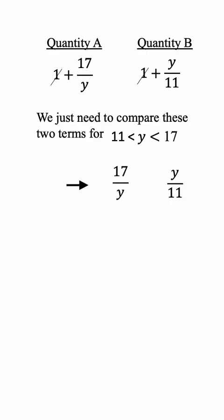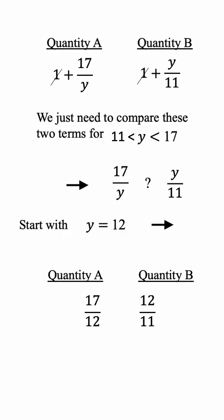We have these two terms to compare, so we can start with y equal to 12. By plugging it in to these two terms, we have quantity A equal 17 over 12 and quantity B equal to 12 over 11.